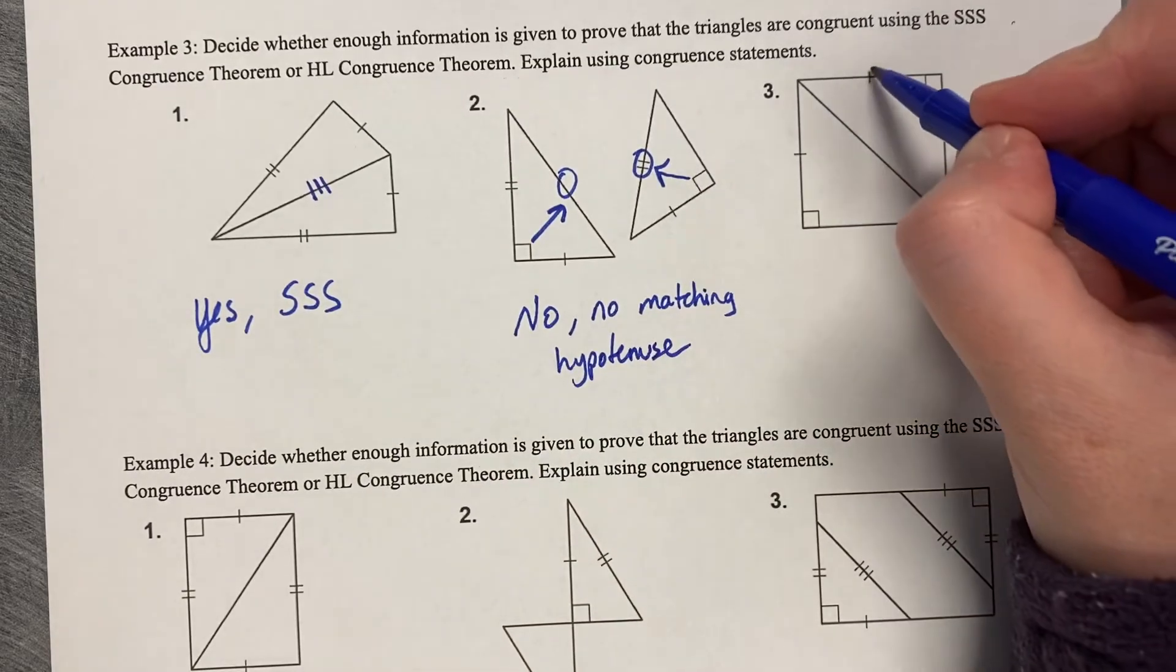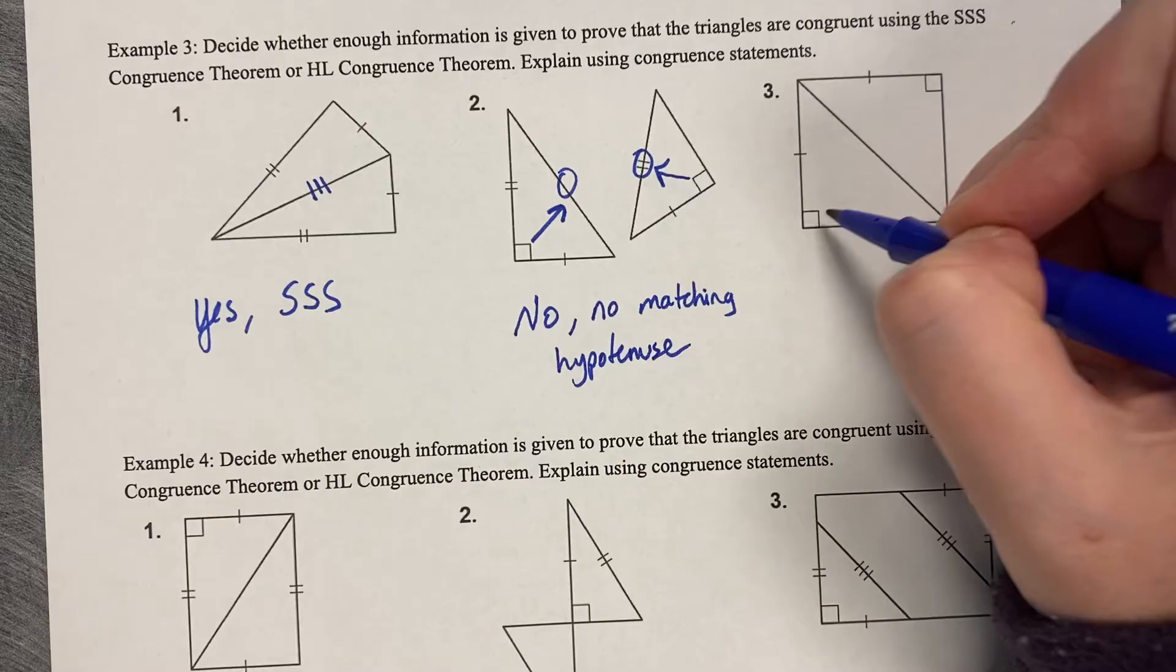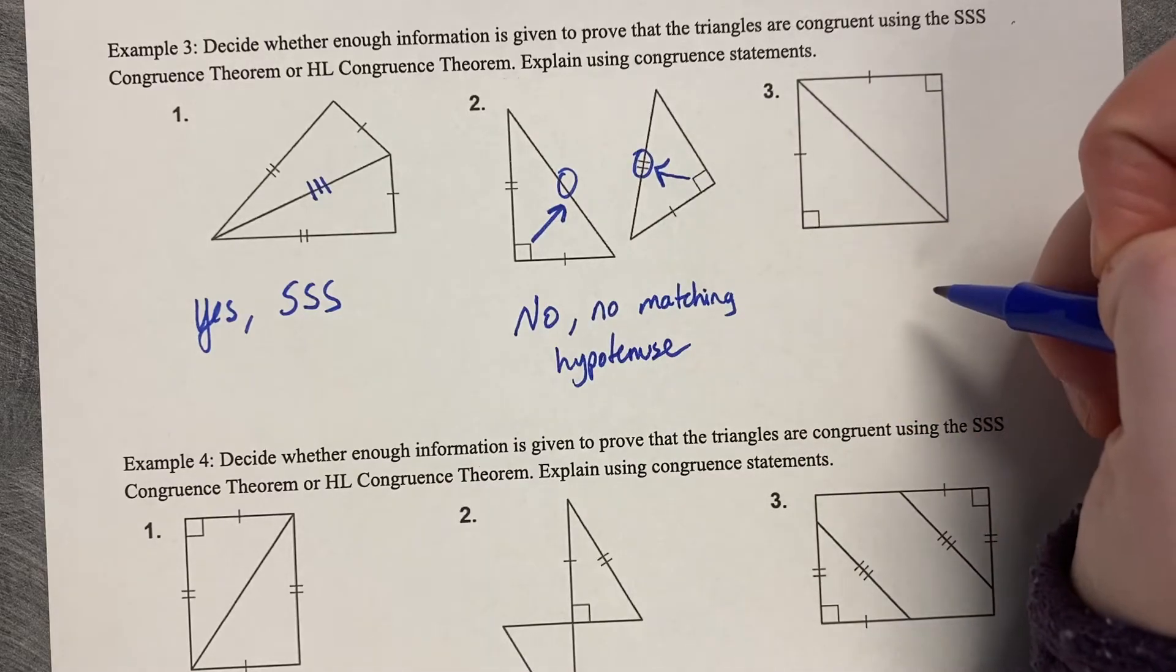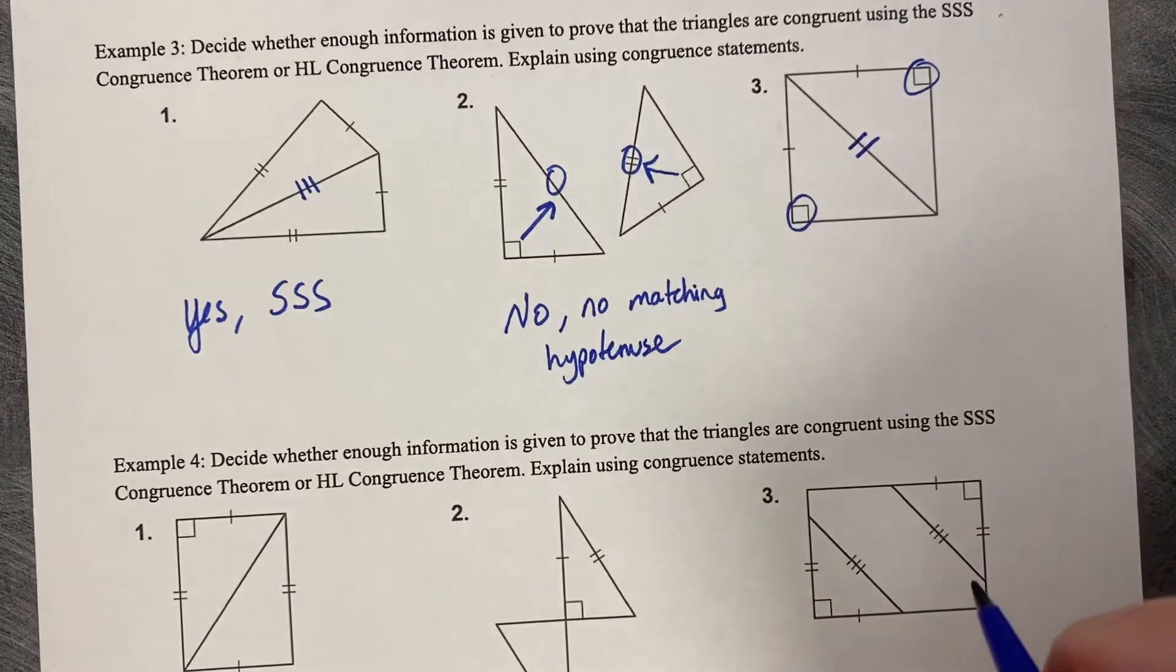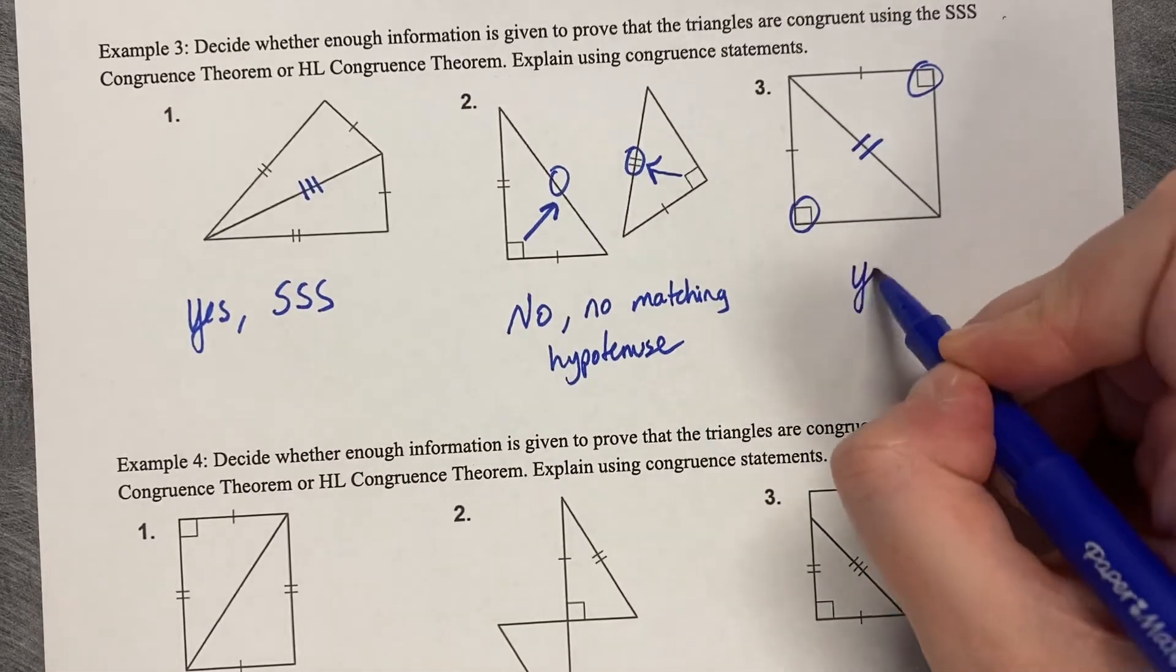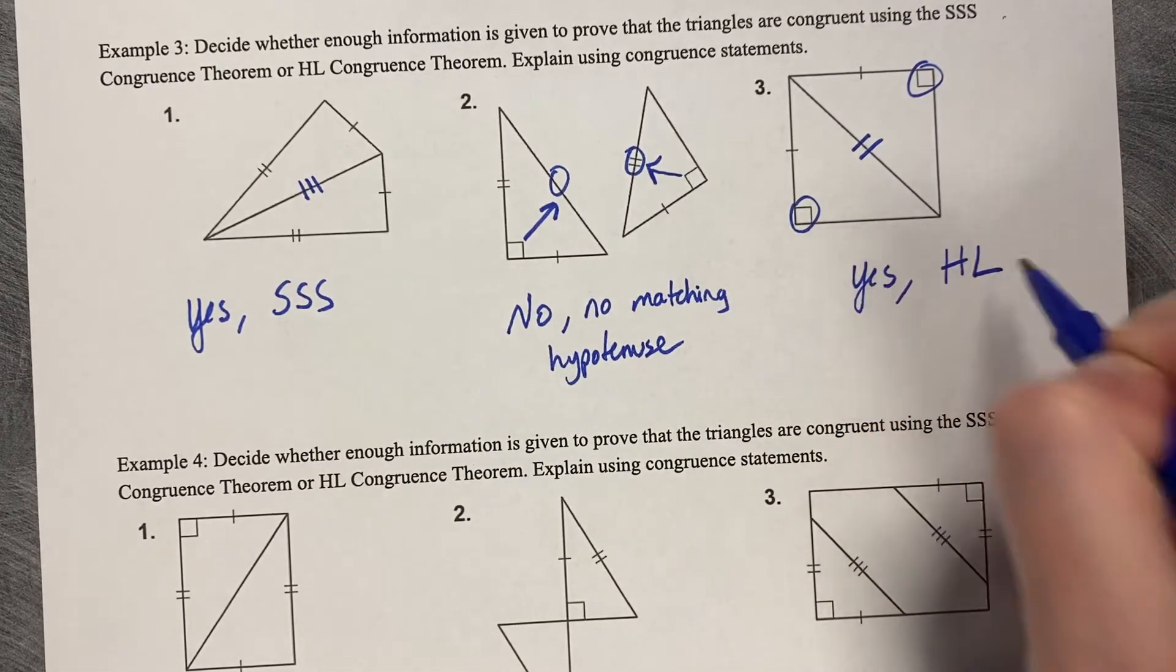How about number three? One for one, 90-degree angle. All we have left is a hypotenuse because we have that 90-degree angle. I can see they share a hypotenuse. So yes, by hypotenuse leg.